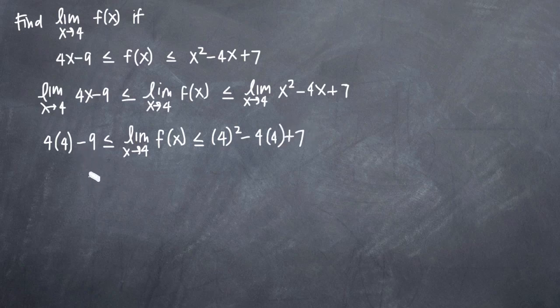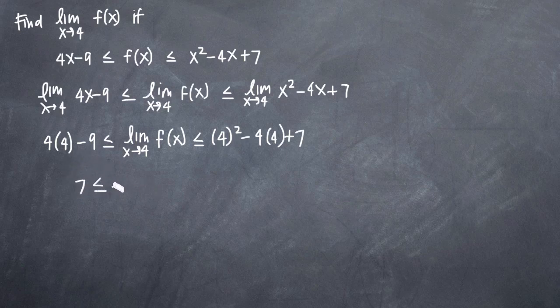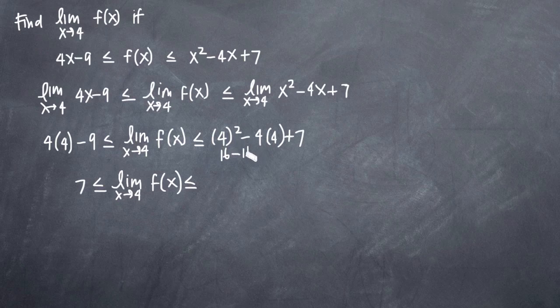And now we can simplify the left and right hand sides. We'll get 16 minus 9 which gives us 7. We'll call that less than or equal to the limit as x approaches 4 of f(x) and we'll say that that's less than or equal to, here we'll have 16 minus 16 plus 7 and obviously we'll get these two to cancel. So it'll be less than or equal to 7.